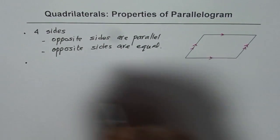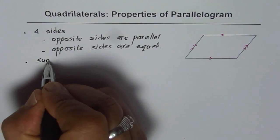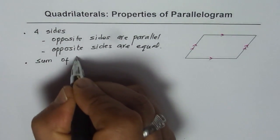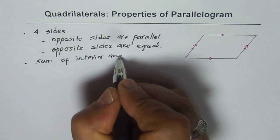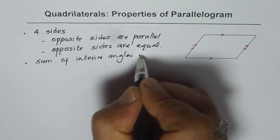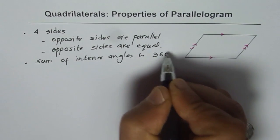Now let us get back to angles. We know sum of interior angles is how much? 360 degrees. Sum of interior angles is 360 degrees.